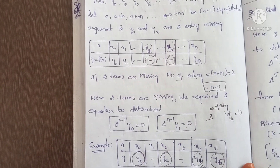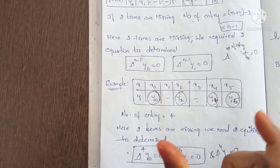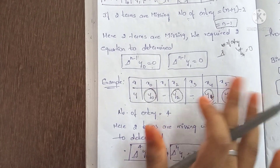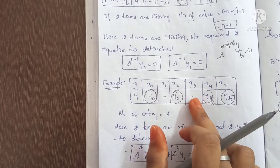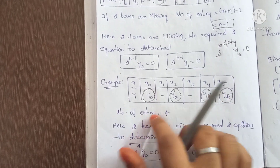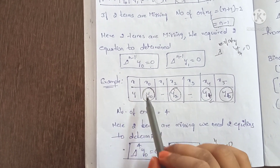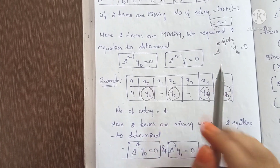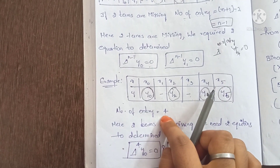Let me add an example. Here x goes from x0 to x5, with y0, y2, y3, y4, y5 given. The x values are x0 equals 0, 1, 2, 3, 4. So number of entries equals 4.